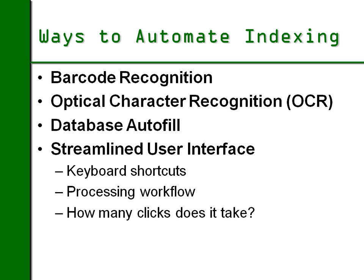Since indexing is so labor intensive, Simple Index is designed to automate that process as much as possible, and there are several different ways to do so. The first is barcode recognition. Barcode recognition is the preferred method for automating indexing. It is very fast to process barcodes, the recognition is very accurate, and in general you get the best results and the largest savings in labor with barcode recognition.